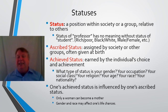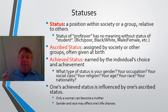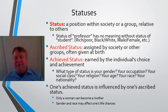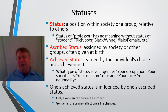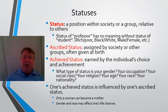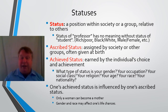Achieved status is something you can influence, but it's very often influenced by your ascribed status as well. For example, only a woman can become a mother — that's a limitation. On the other hand, gender and race will probably affect everybody's life chances one way or the other.